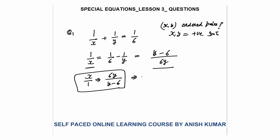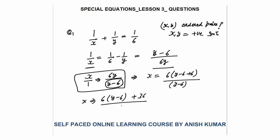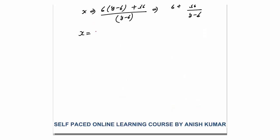The second step is to simplify. Whatever expression is in the denominator — here y − 6 — we make the same expression in the numerator. So x = [6(y − 6) + 36] / (y − 6), which simplifies to x = 6 + 36/(y − 6). That is the simplified expression.